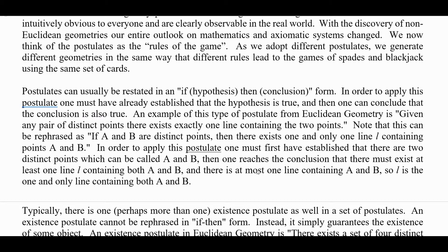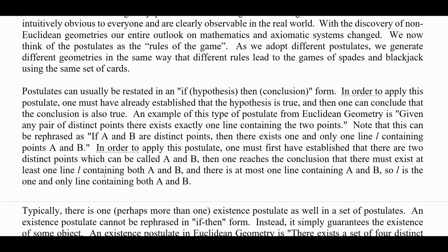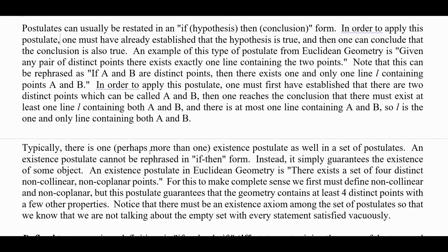In order to apply a postulate, one must have already established that the hypothesis is true, and then one can conclude that the conclusion is also true. An example from Euclidean geometry: given any pair of distinct points, there exists exactly one line containing the two points. This can be rephrased as: if A and B are distinct points, then there exists one and only one line L containing points A and B. One must first establish that there are two distinct points A and B, and then conclude that there must be one line containing them — L is the one and only line containing points A and B.